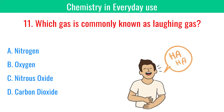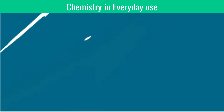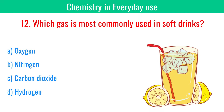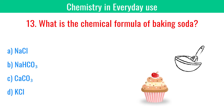Which gas is commonly known as laughing gas? Nitrous oxide. What is the chemical formula of baking soda? NaHCO3, also called sodium bicarbonate.